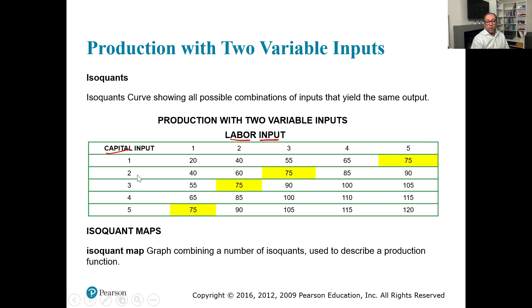We created this chart showing one labor, two labor, three labor, four labor, five labor, and one capital, two capital, three capital. The combinations include one labor and one capital, one labor and two capital, one labor and three capital, and one labor and four capital. Each column reflects a specific number of labor units combined with all capital combinations.